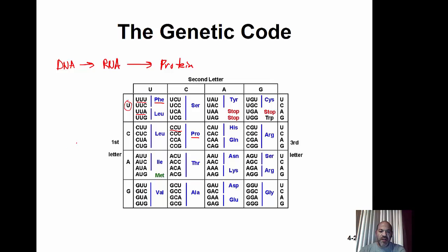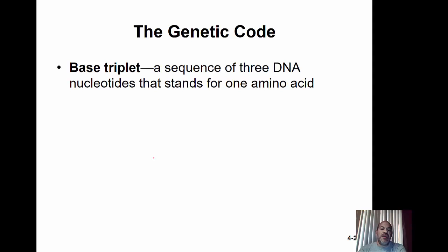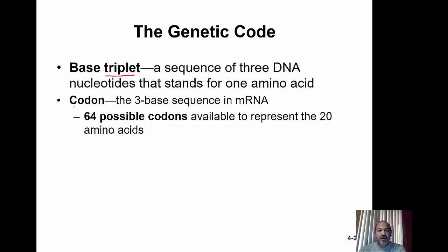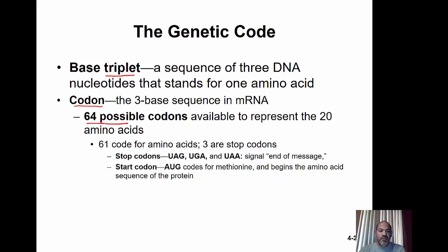Of the 64 codes, three are stop codons — they tell us to stop making a protein — and one, AUG, is the start codon, coding for the amino acid methionine. The three-letter sequences in DNA are called base triplets, and each corresponds to a three-letter code on the mRNA called the codon. There are 64 possible codons representing 20 amino acids: 61 code for amino acids, three are stop codons, and AUG is the start codon coding for methionine.